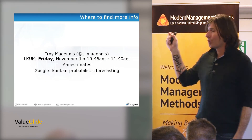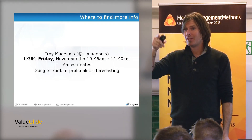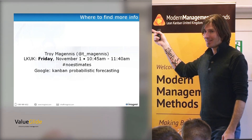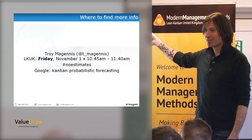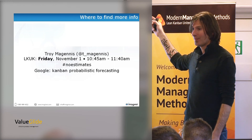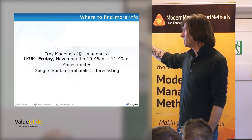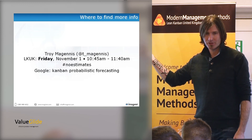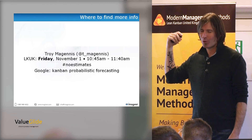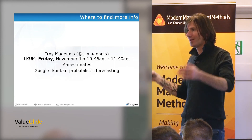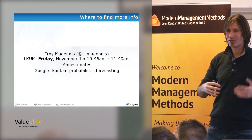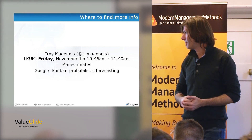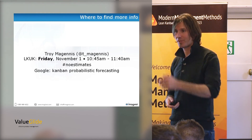Troy's in the back of the room — he's going to have a talk about the no estimates thing tomorrow. If you want to dig into more of that, go to his talk. Look on Twitter for no estimates. You'll find Drunken Cod, Neil Killick, and a whole bunch of people involved in that. Or just Google Kanban probabilistic forecasting and you'll start to find Troy's stuff too.